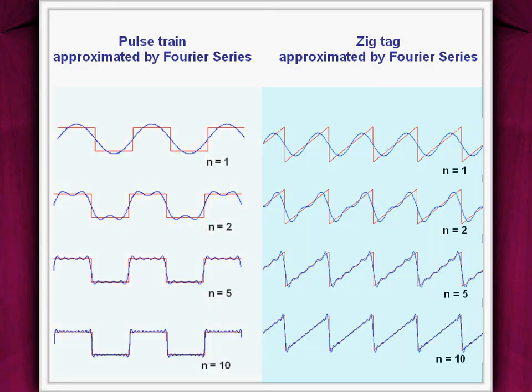Fourier series representation of a signal is well understood by these two examples. These are the pulse stream and a zigzag signal approximated by Fourier series. As observed, larger the number of harmonics, more accurate is the approximation of the signal.